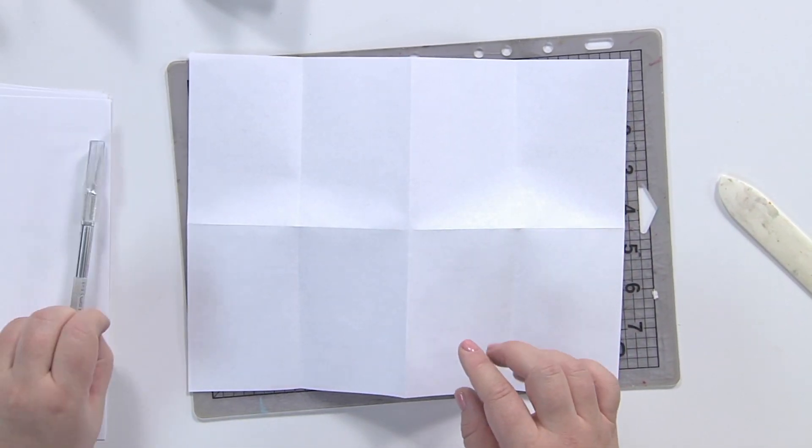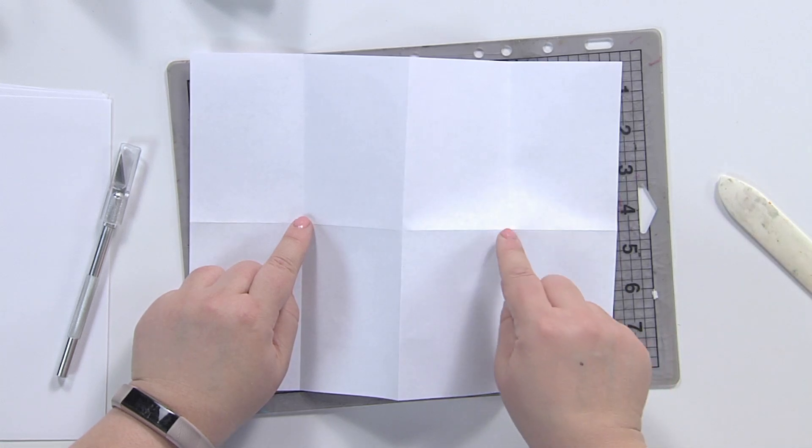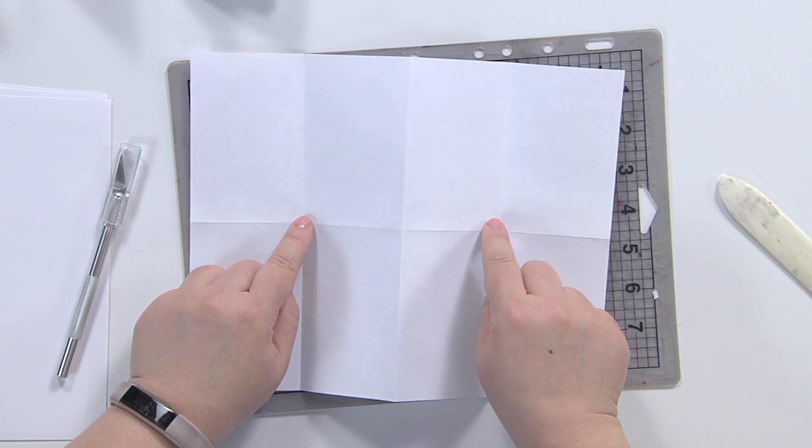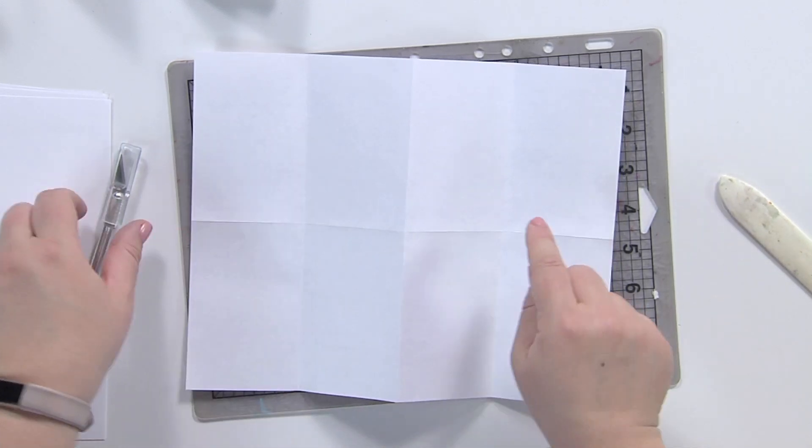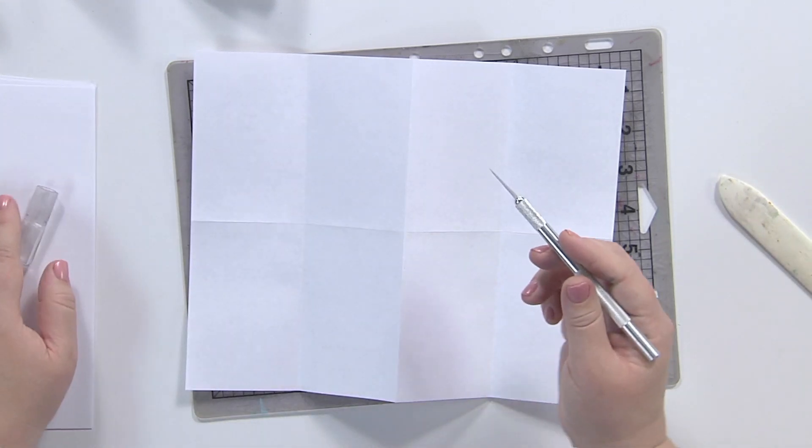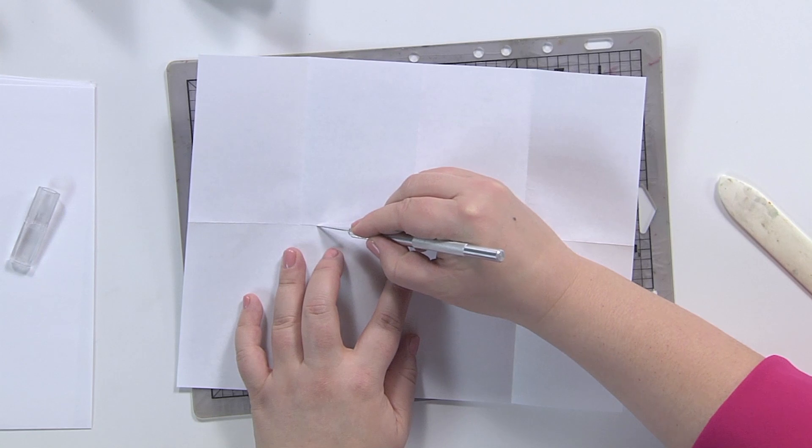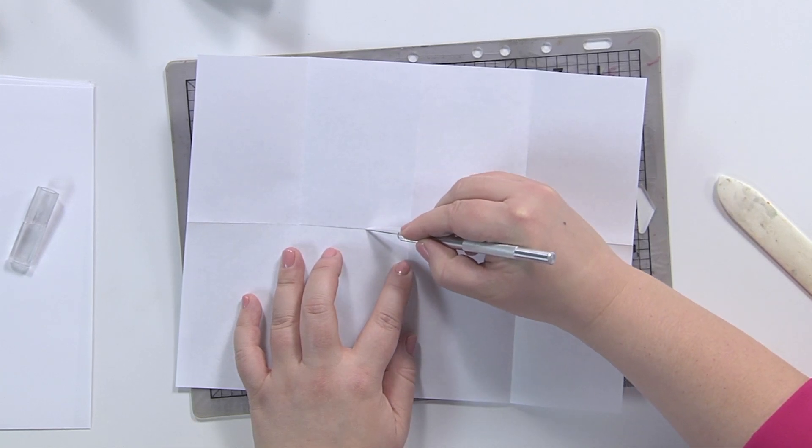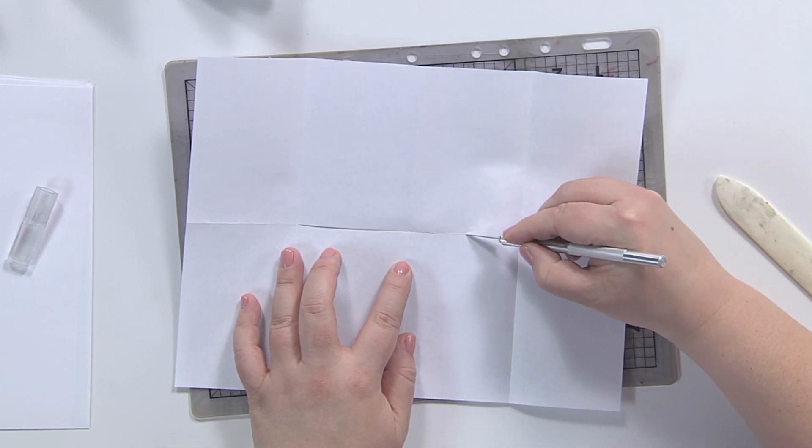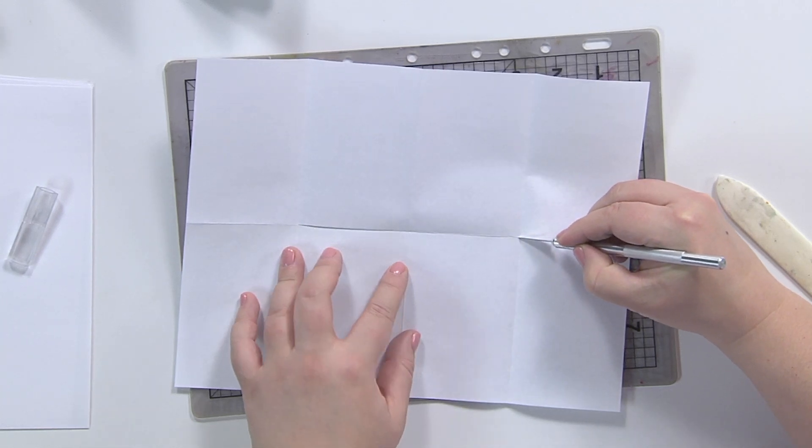But essentially, I want to cut between this point and this point, between these two folds, just along this line. So I'm going to use my craft knife. You could also use scissors if you wanted. And just following that line, I'm going to slowly cut, cut, cut, just to get that nice cut in there.